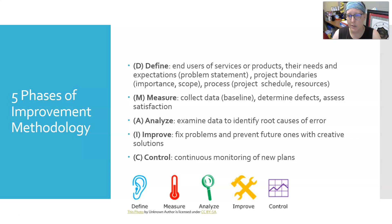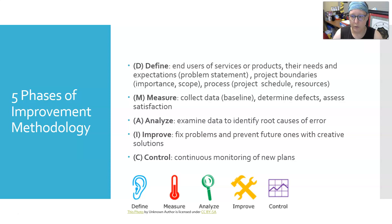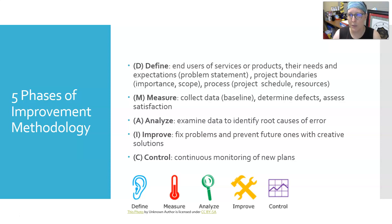Then define the process: what's the project schedule, what are the resources needed. The next phase is M for Measure, where you collect baseline data, determine the defects, and assess baseline satisfaction. In the Analyze phase, you dive deep into the data to identify the root causes of error. Once you've identified root causes, you move to I for Improve, where you fix problems and prevent future ones with creative solutions. Then C for Control, where there is continuous monitoring of the new plans to make sure the solutions have indeed fixed the problem.